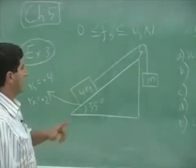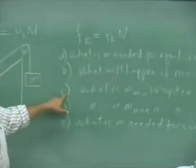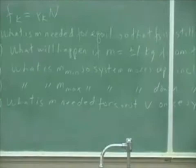Now, part B, what will happen? We can again skip part B, go to C, then come back to B. Because in C, what is M min, so system moves up incline.